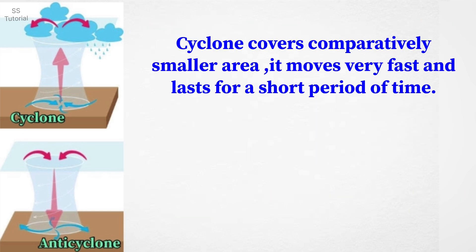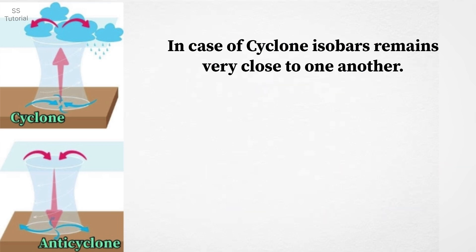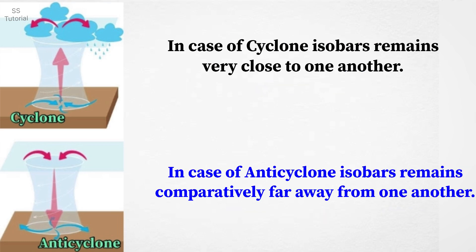Cyclone covers a smaller area and it moves very fast and lasts for a short period of time, whereas anticyclone covers a larger area and it moves slowly and lasts for a long period of time. In case of cyclone, isobar remains very close to one another, whereas in case of anticyclone, isobar remains far away from one another.